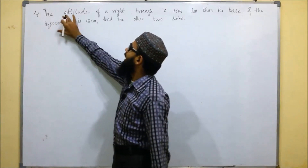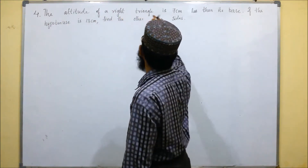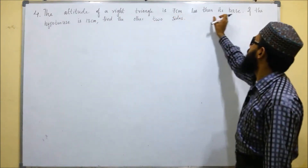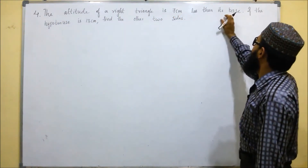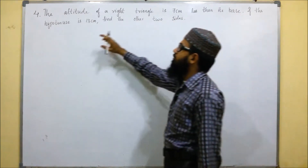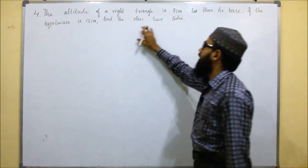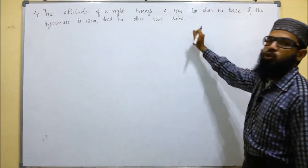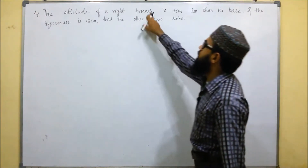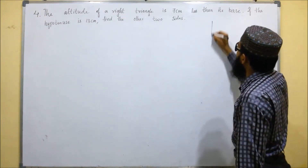The problem states that the altitude of a right triangle is 7 centimeters less than its base. If the hypotenuse is 13 centimeters, find the other two sides.